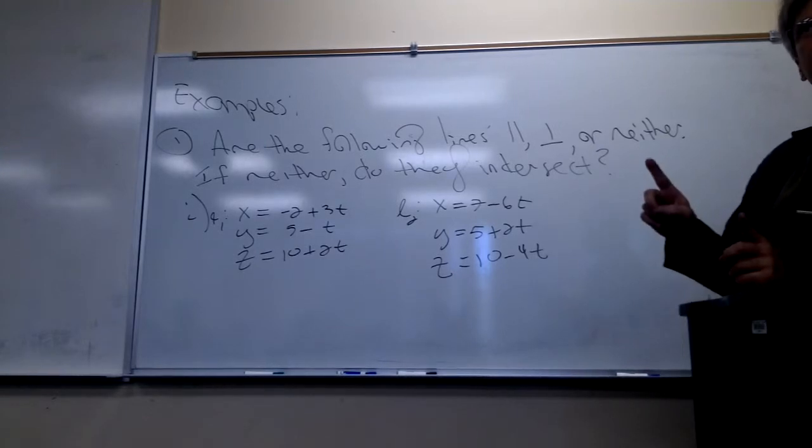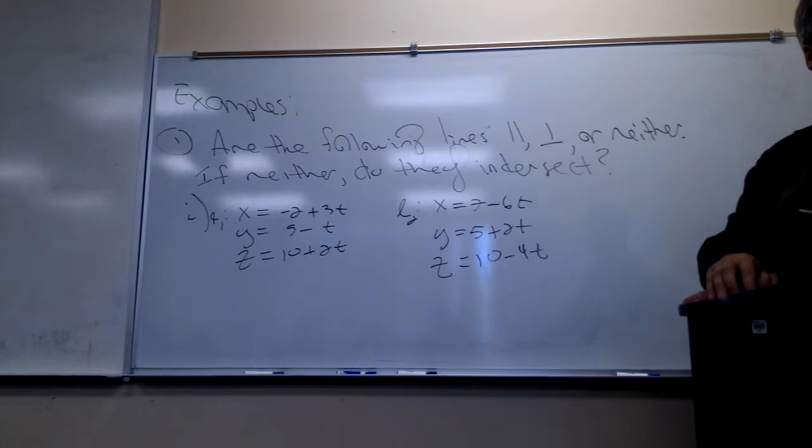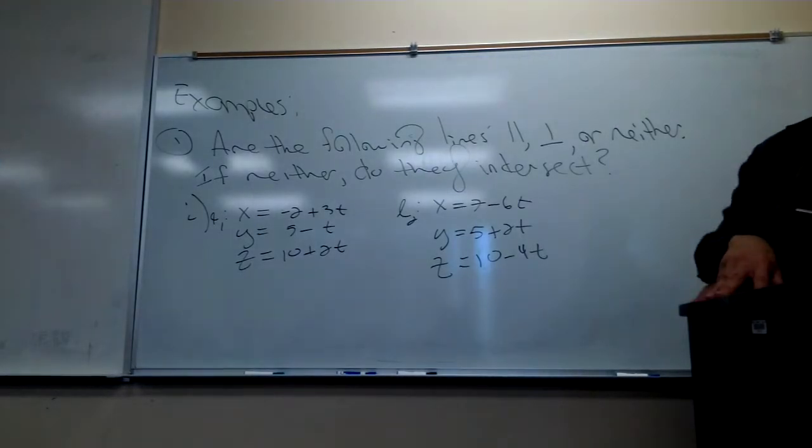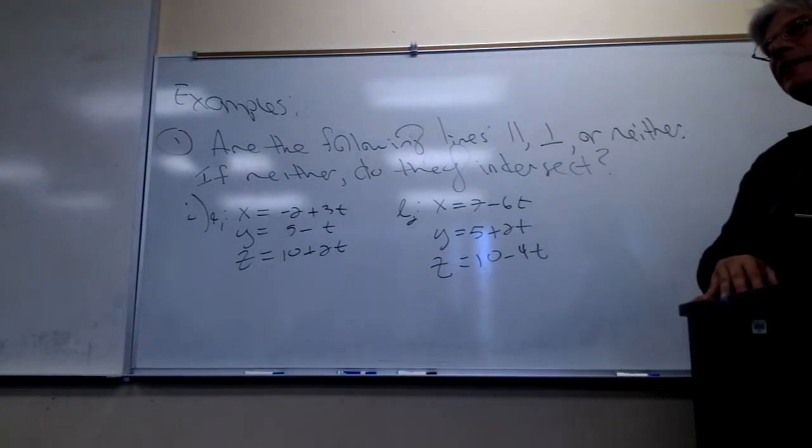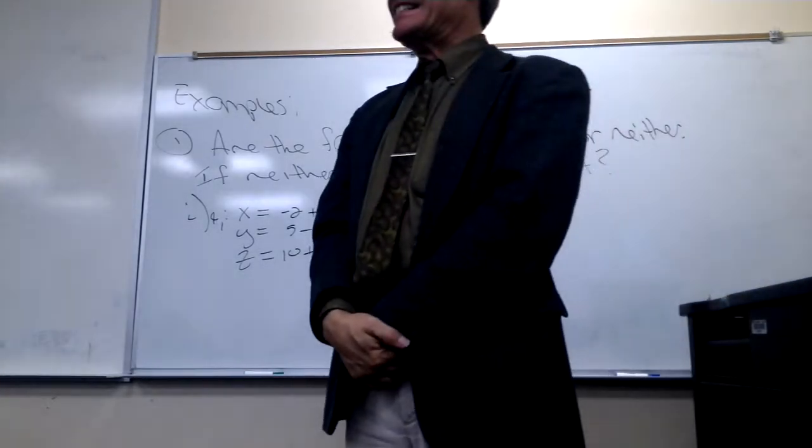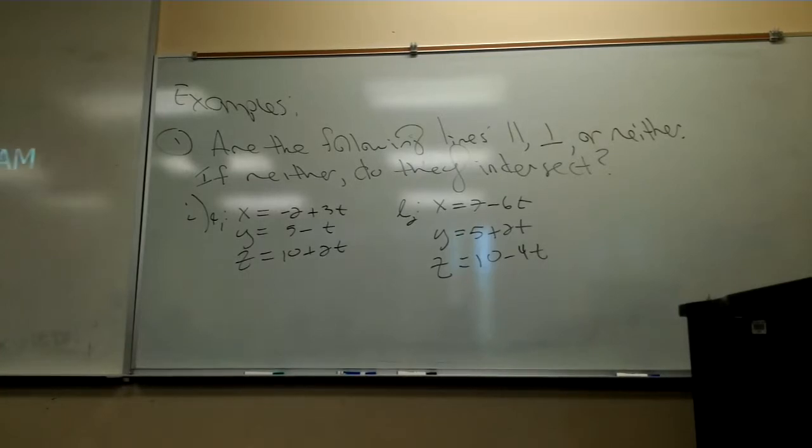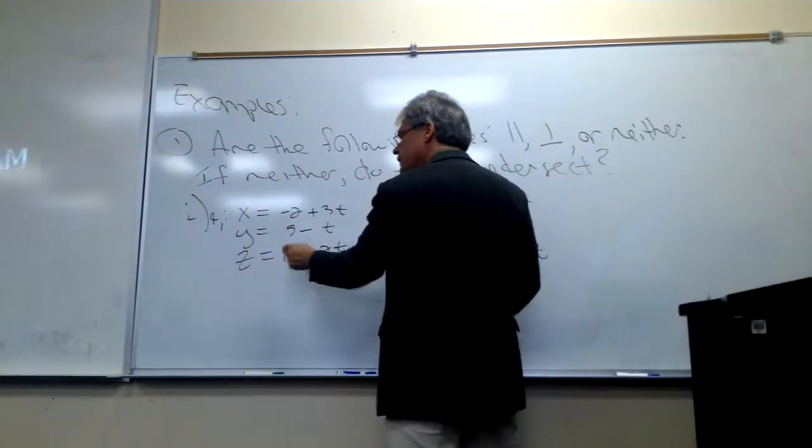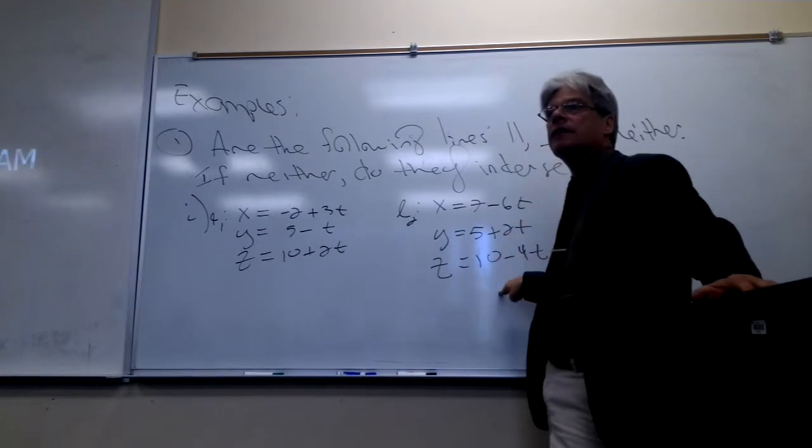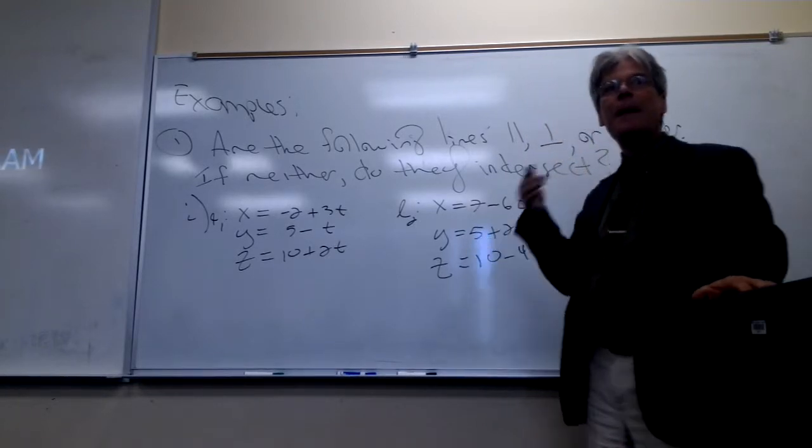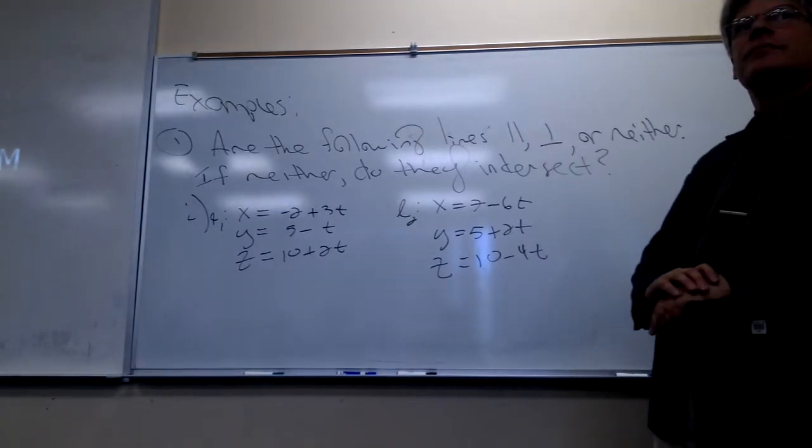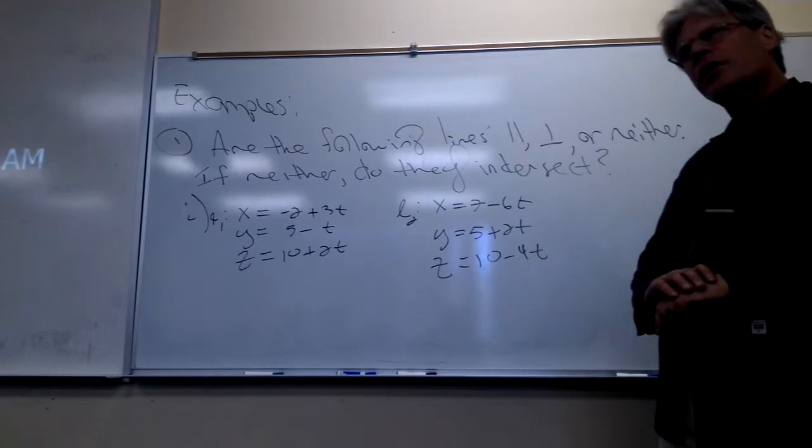How about another question? Even though they're parallel, do they intersect? Lines can't intersect if they're parallel. Sure they can. They can be on top of each other. Pick a point. Notice if T is equal to 0, clearly I've got the point negative 2, 5, and 10 on one of the lines. But over here, when T is 0, I've got 7, 5, and 10. So what can you conclude? Yeah, they're not on top of each other. Therefore, they are parallel and do not intersect.